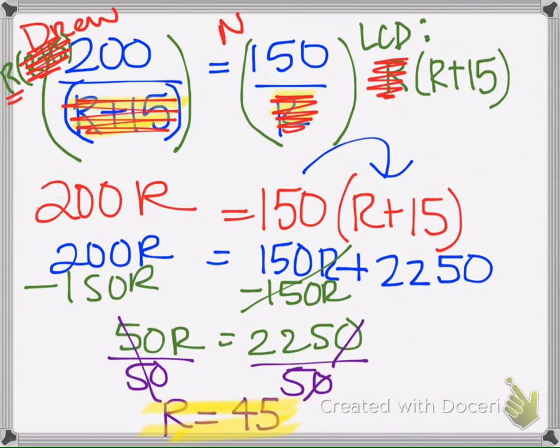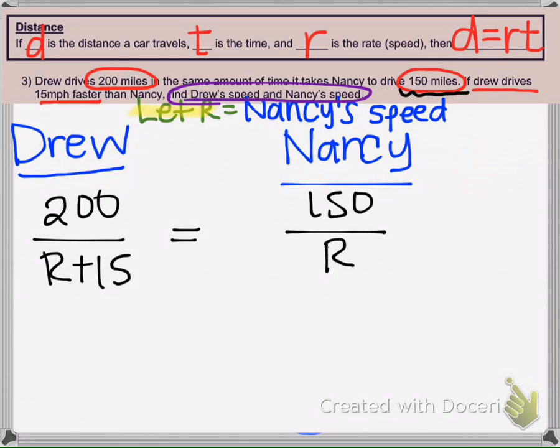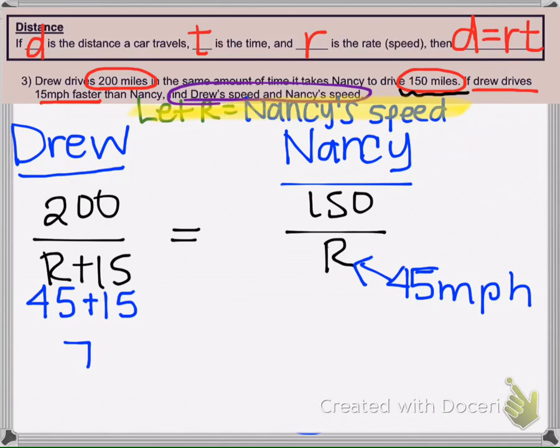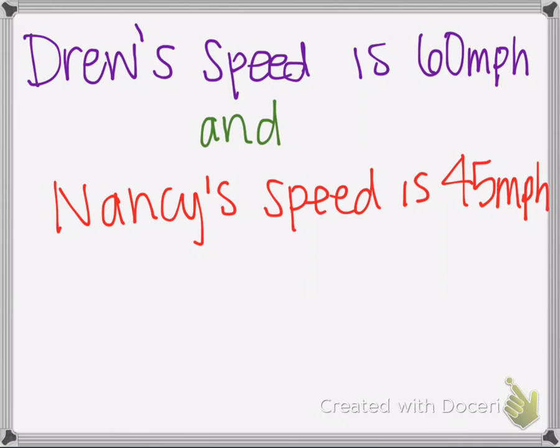So since we get R is 45, if we go back here, R represents Nancy's speed. So we would say that Nancy's speed, her speed right here, is 45 miles per hour. Drew's speed is 15 more. So 60 miles per hour. Whoops, made a mistake, that should be 60. So Drew's speed is 60 miles per hour and Nancy's speed is 45 miles per hour.